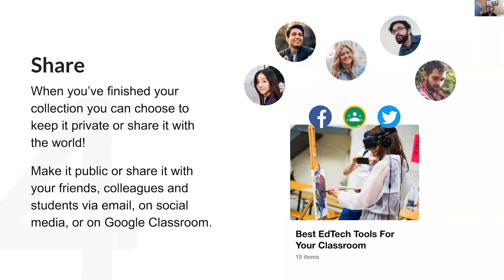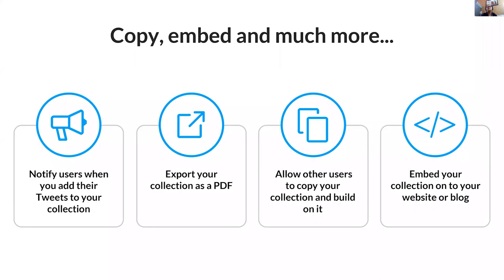We can share the collection on any platform — Google Classroom, Facebook, Twitter, or anywhere. Additional features include notifying users and exporting the entire collection as a PDF. If I want to send a compiled PDF of my collection to one place, I can download it. I'll show each part of the demonstration keeping time as a constraint. We can also embed our Wakelet into an HTML page or blog, and we can allow people to copy our Wakelet collection, similar to how open-source libraries allow copying code.